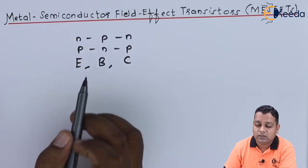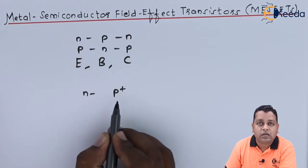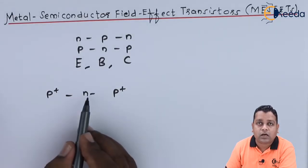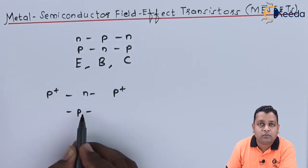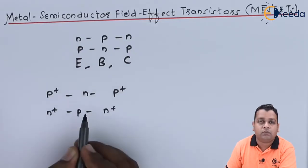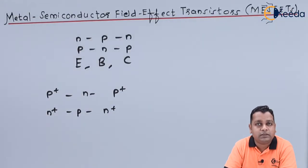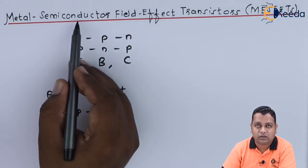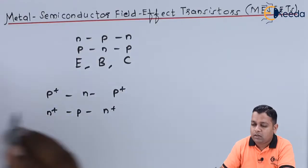For the field effect transistor, in the JFET we have an N-channel sandwiched between two heavily doped P-type regions, or a P-channel sandwiched between heavily doped N-type regions. We have learned the depletion type and its current-to-voltage characteristics. Now, if we have a field effect transistor made with a metal-to-semiconductor connection, we get the device called MESFET.